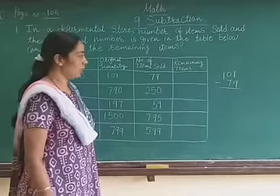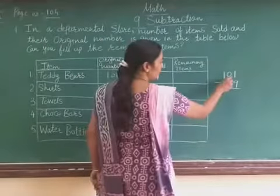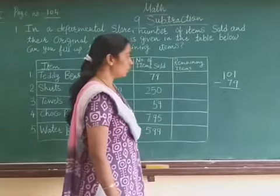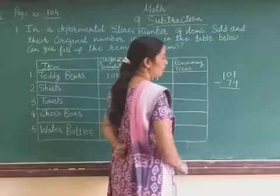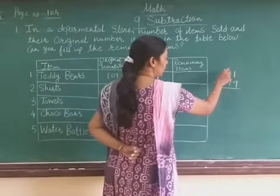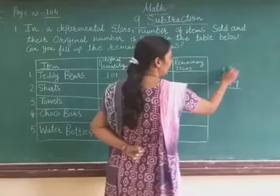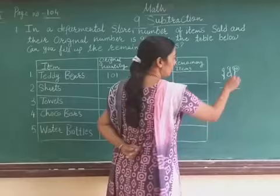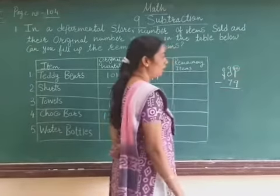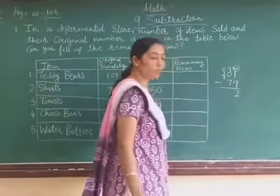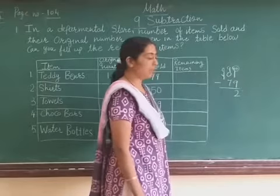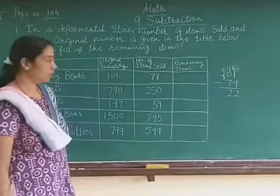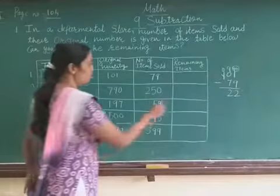1 minus 9 is not possible, so we borrow from the 10th place. But there is also a 0 there, so on the 100th place we regroup the 1 as 0, giving 9 and 10. On the 1's place, 11 minus 9 gives 2. On the 10's place, 9 minus 7 gives 2. So the remaining teddy bears are 22.